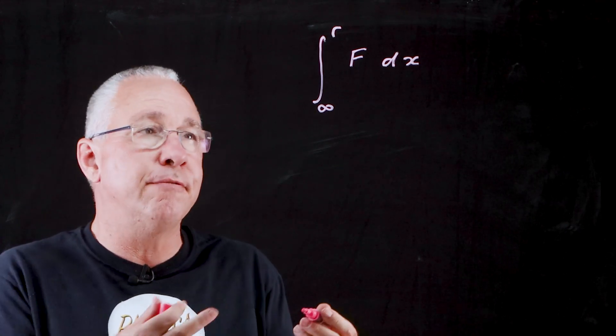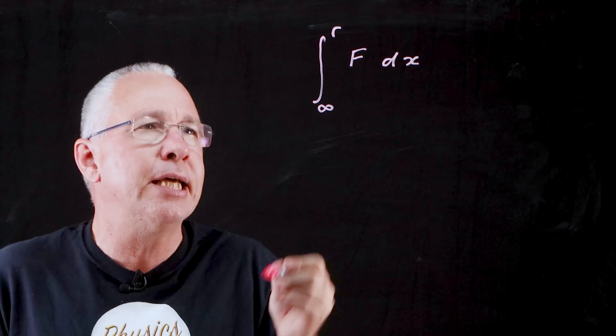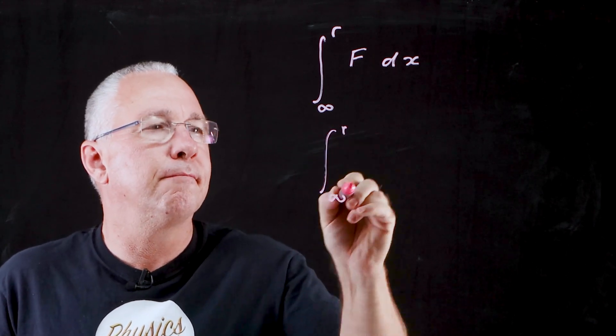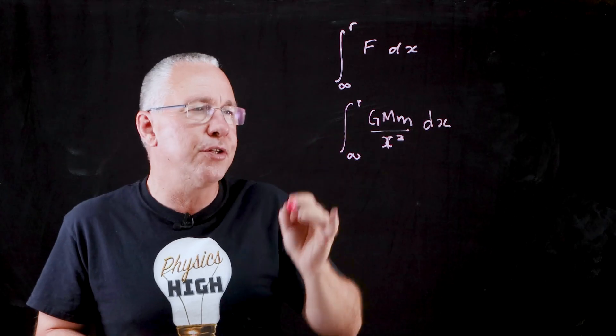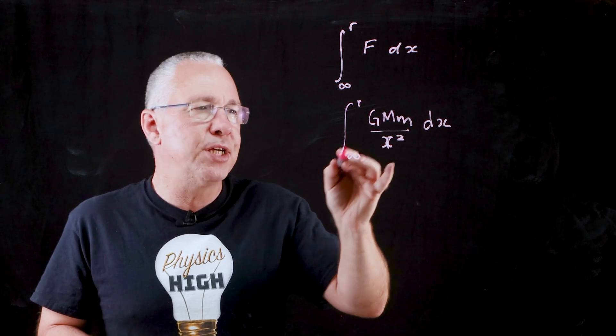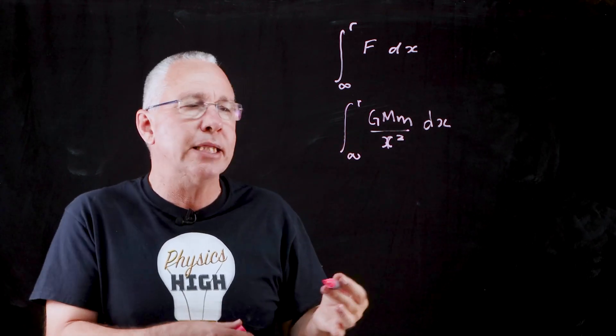What I now do is substitute in the formula for force. In this case, the force is not mg, but this. In other words, it's dependent on the gravitational constant G, the mass of one object M, the mass of the other object m, divided by the distance between them squared.